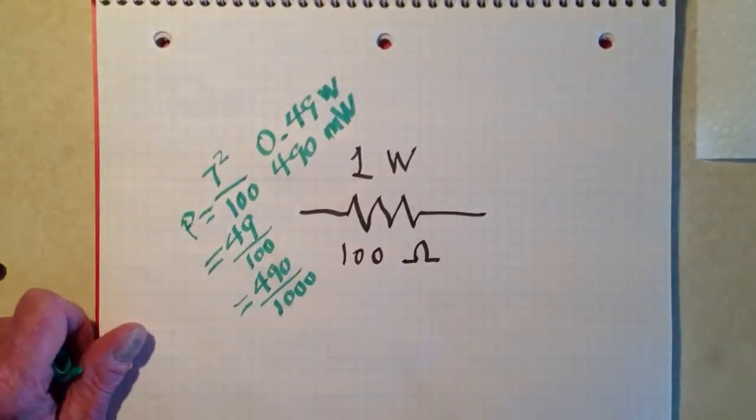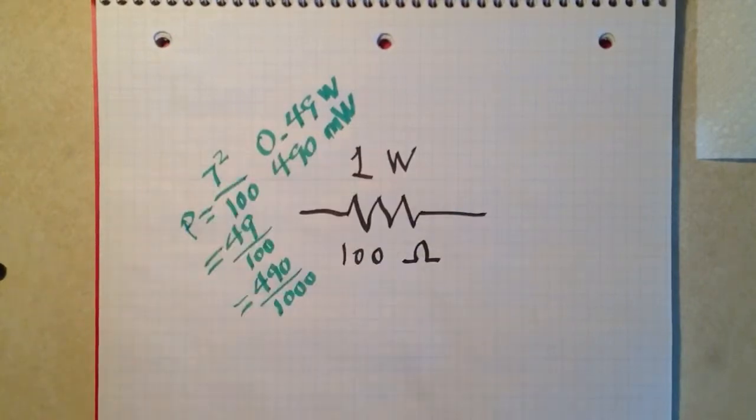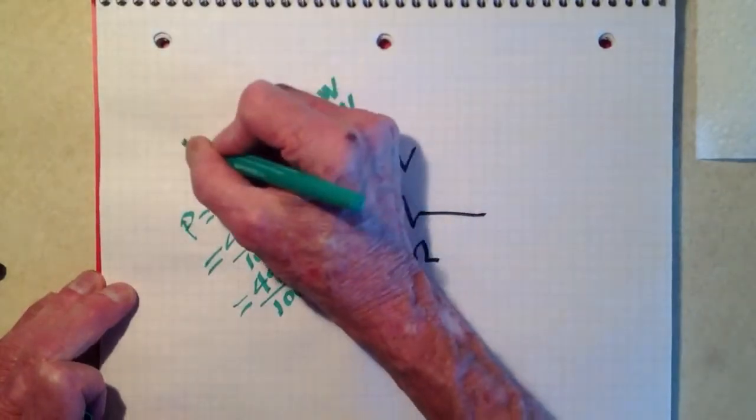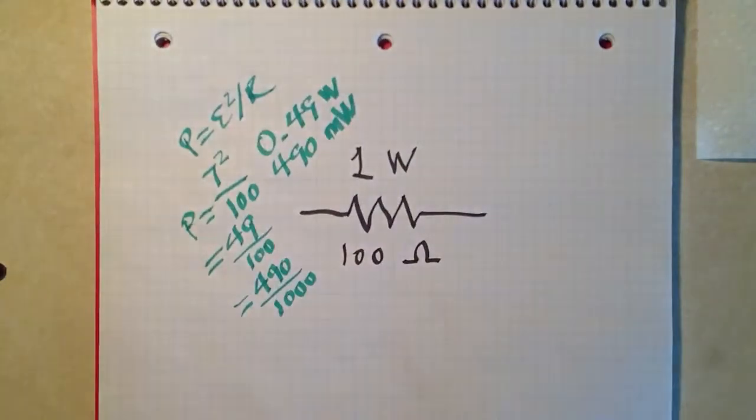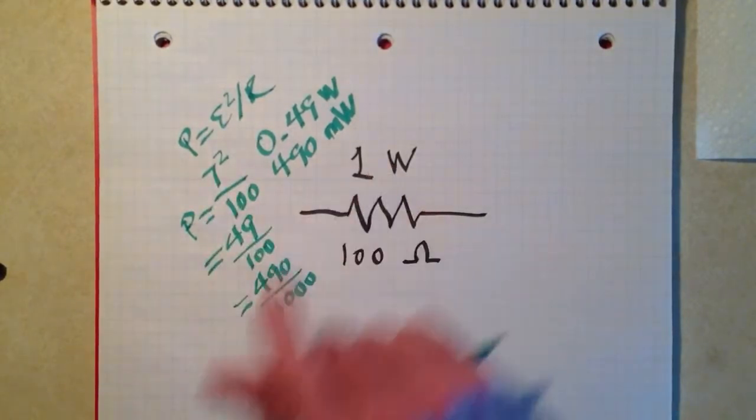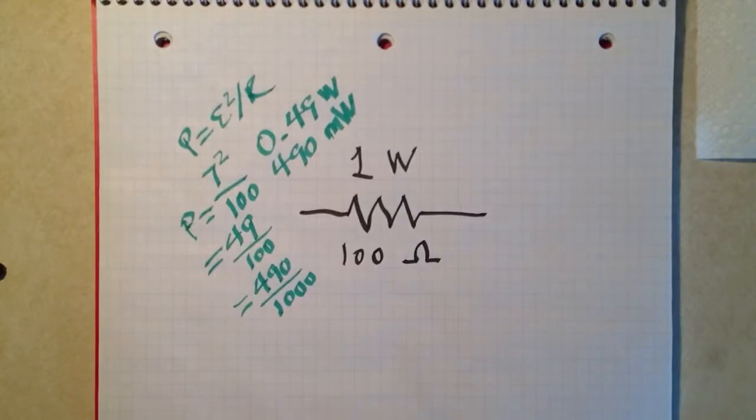That's not 70% of its rated 1 watt. That's only 49% of its rated 1 watt. So actually, we can put a little more than 7 volts across here. And I invite you to manipulate the formula P equals E squared over R. Remember that formula? The power equals the voltage squared over the resistance. I invite you to manipulate that formula and find out exactly what voltage we can put across here to get 700 milliwatts or 0.7 watts as power dissipation.